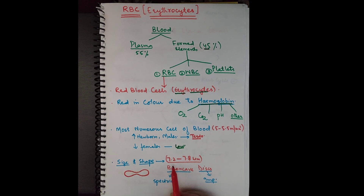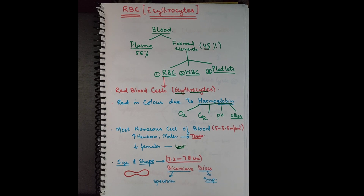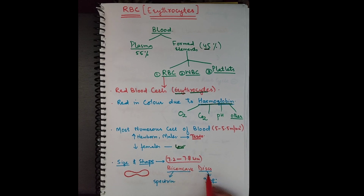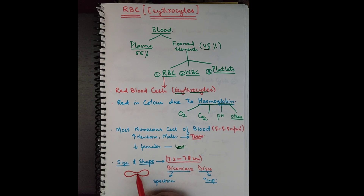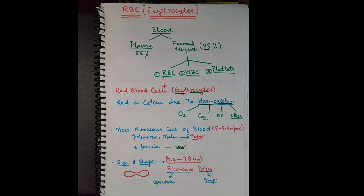The size of RBCs is 7.2 to 7.8 micrometers in diameter. The shape of RBCs is biconcave discs. On the lateral view the RBC is biconcave — it is relatively depressed in the center. From the top it will appear depressed in the center, and from the side view it looks like a dumbbell. This biconcave shape is very important for the normal functioning of an RBC.